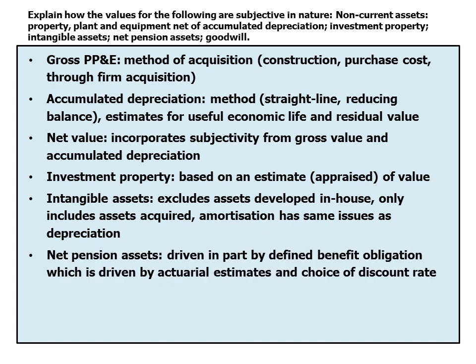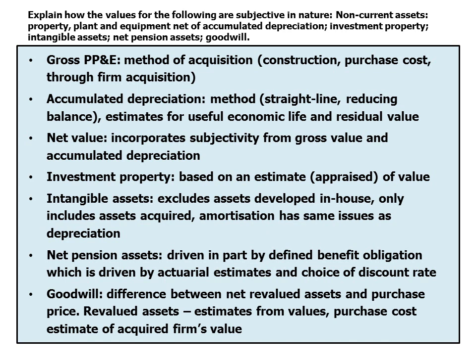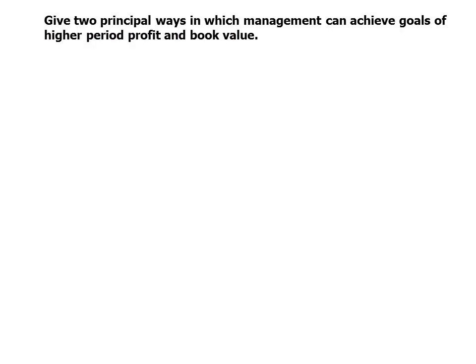Net pension assets are driven partly by the defined benefit obligation, which in turn depends on actuarial assumptions: how long people will live, salary inflation, and crucially the choice of discount rate used to calculate the present value. Goodwill is not actually an asset but an accounting artifact — the difference between the net revalued assets and the purchase price of an acquired firm. Both the revalued assets (estimated by valuers) and the purchase price (management's estimate of value at acquisition) are subjective.